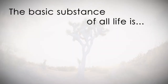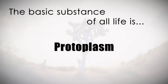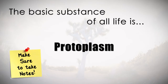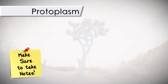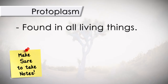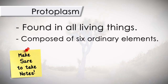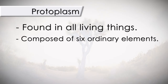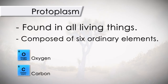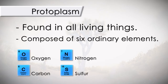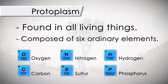The basic substance of all life is protoplasm. Protoplasm is found in all living things. It is composed of six ordinary elements: oxygen, carbon, nitrogen, sulfur, hydrogen, and phosphorus.